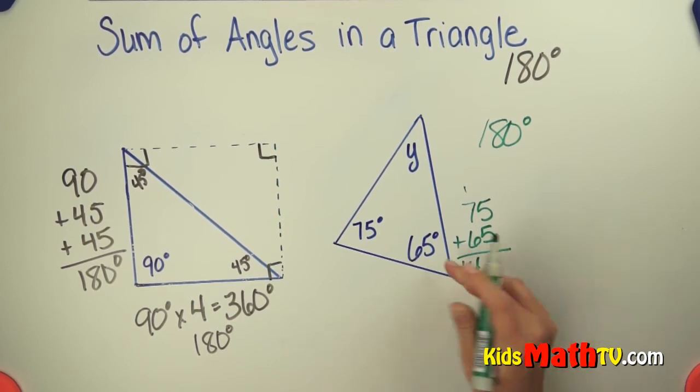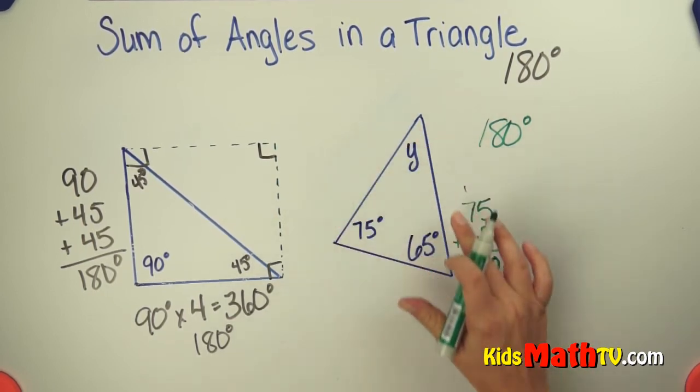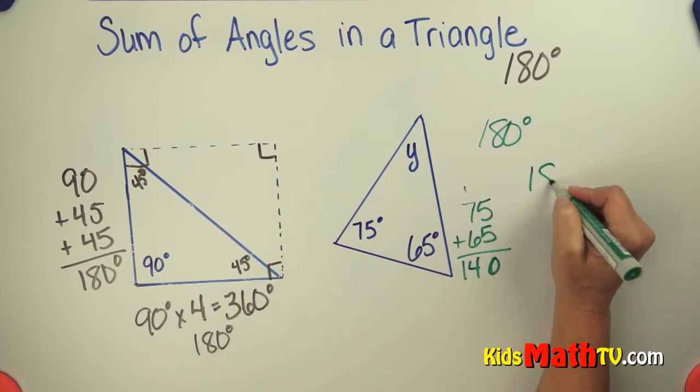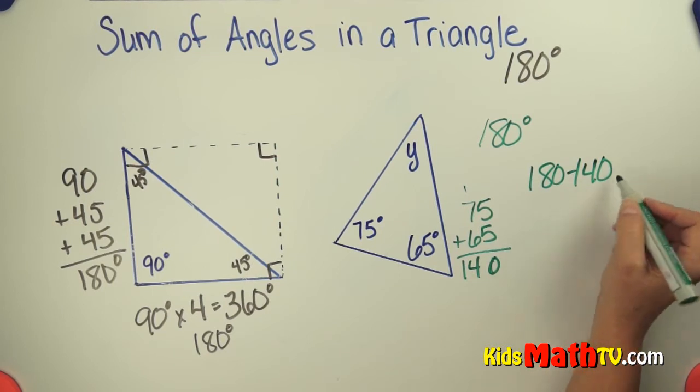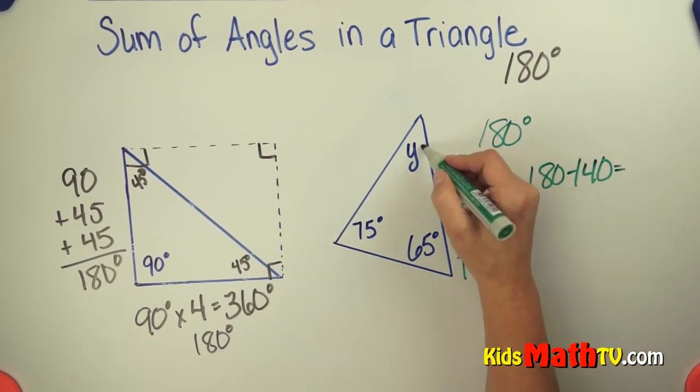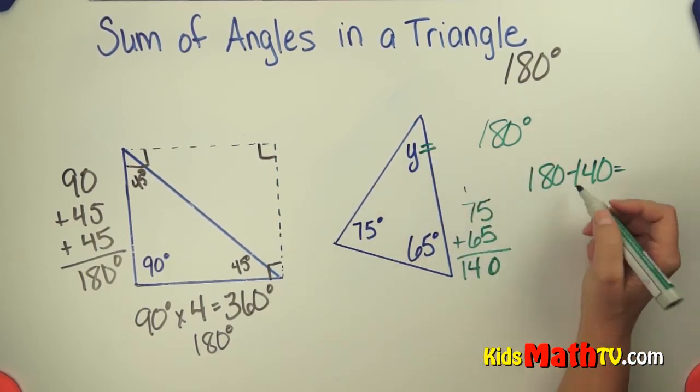So we know this is 140 degrees and the total is 180 degrees. We simply subtract 140 from 180 and we can figure out that the measure of angle Y is 40 degrees.